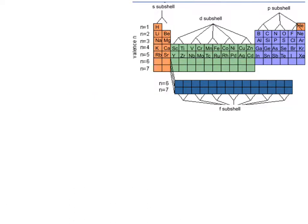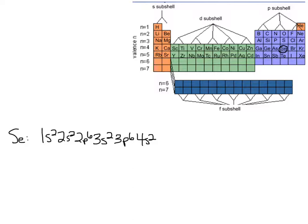Let's try Se (selenium). Writing out the configuration the long way: 1s2, 2s2, 2p6, 3s2, 3p6. Now I'm in the fourth row, so 4s2. Remember when we get to d, it's really one energy level back, so even though it's in the fourth row we write 3d10 — the d subshell of the third energy level gets filled after 4s. Now we're back to the p block, so 4p4. Make sure that the d is really one energy level back — whatever row you're in, you put 1 less than the row number.